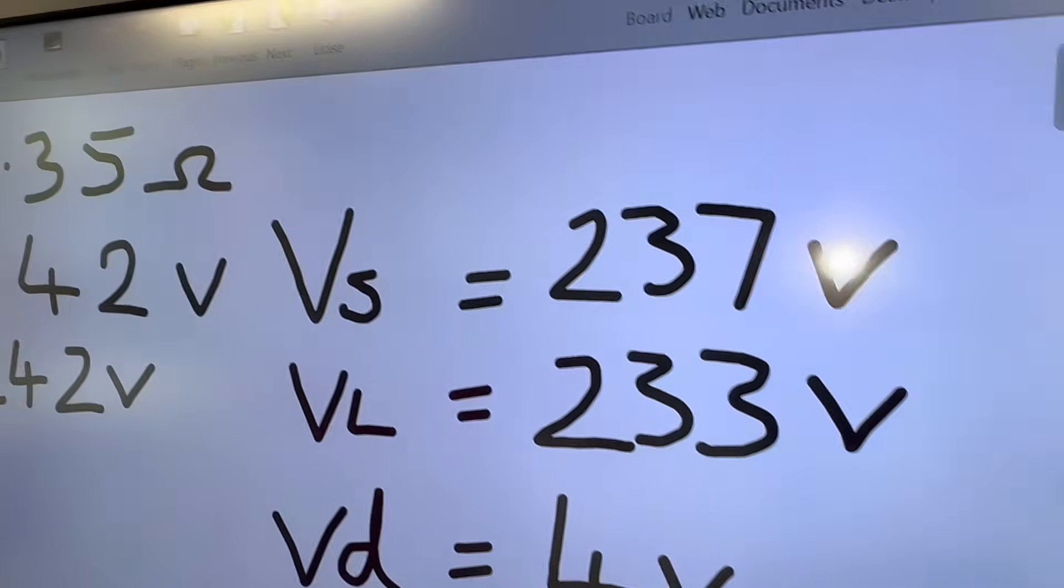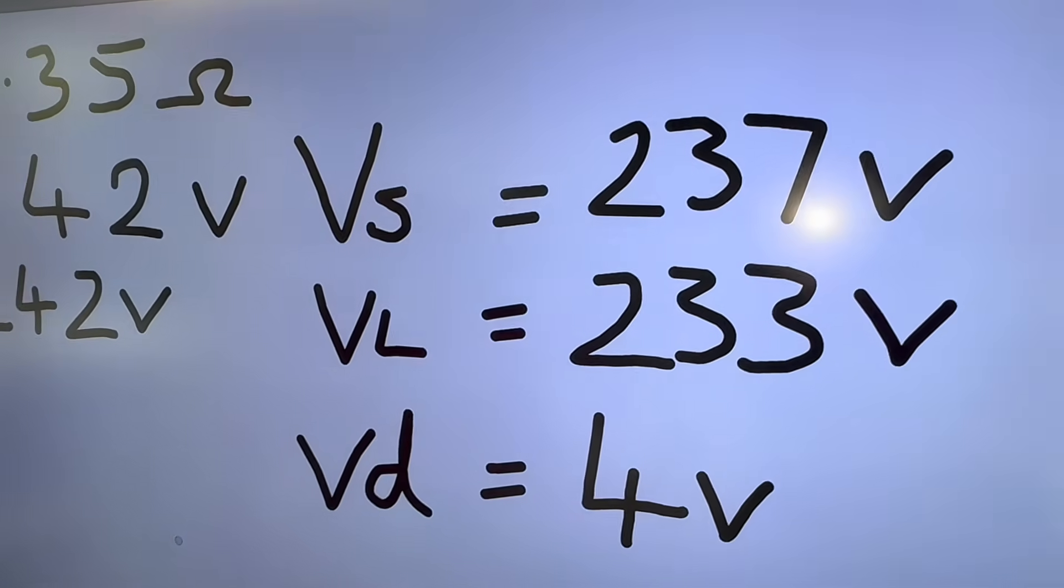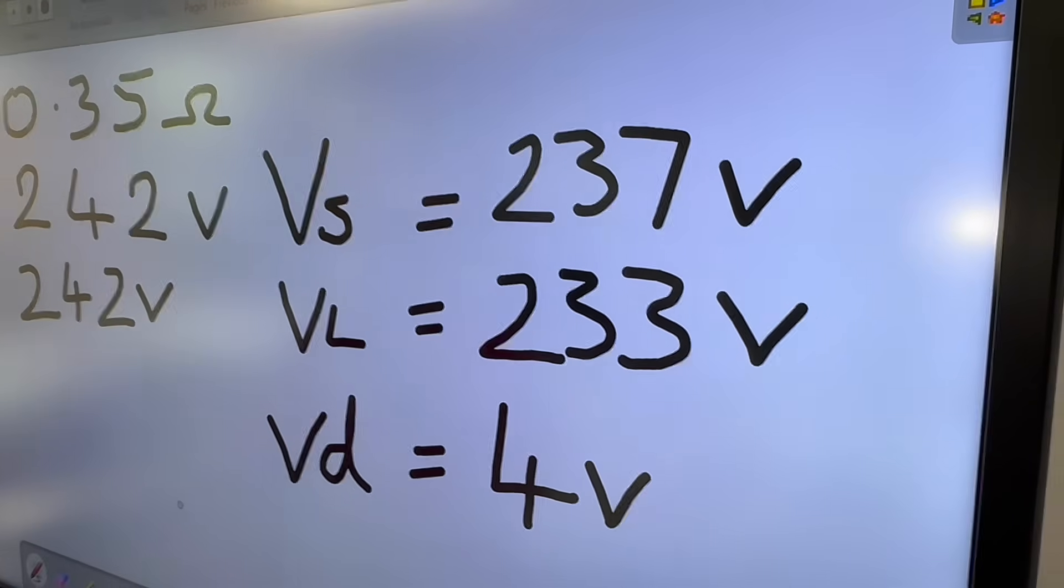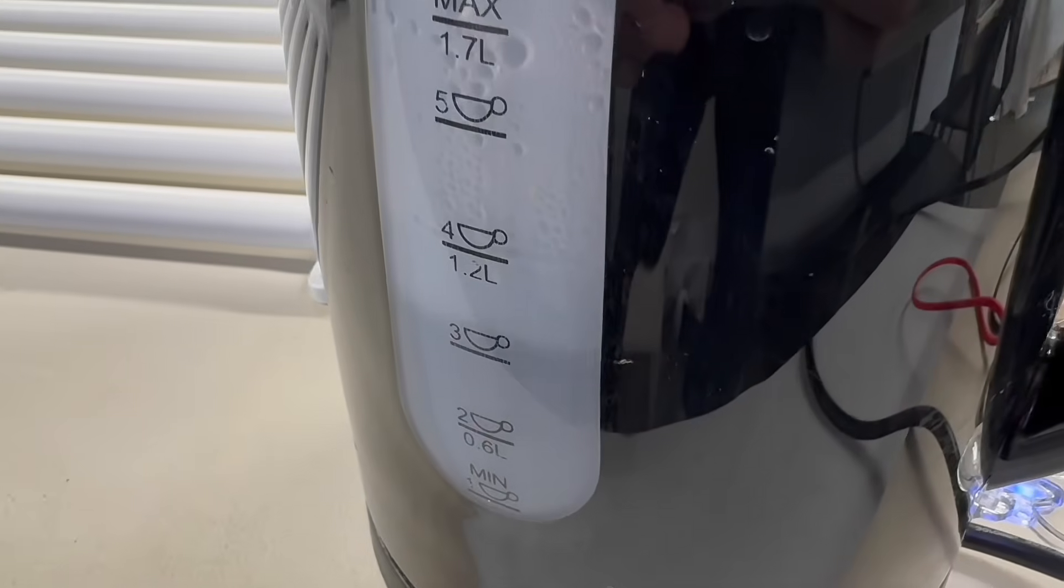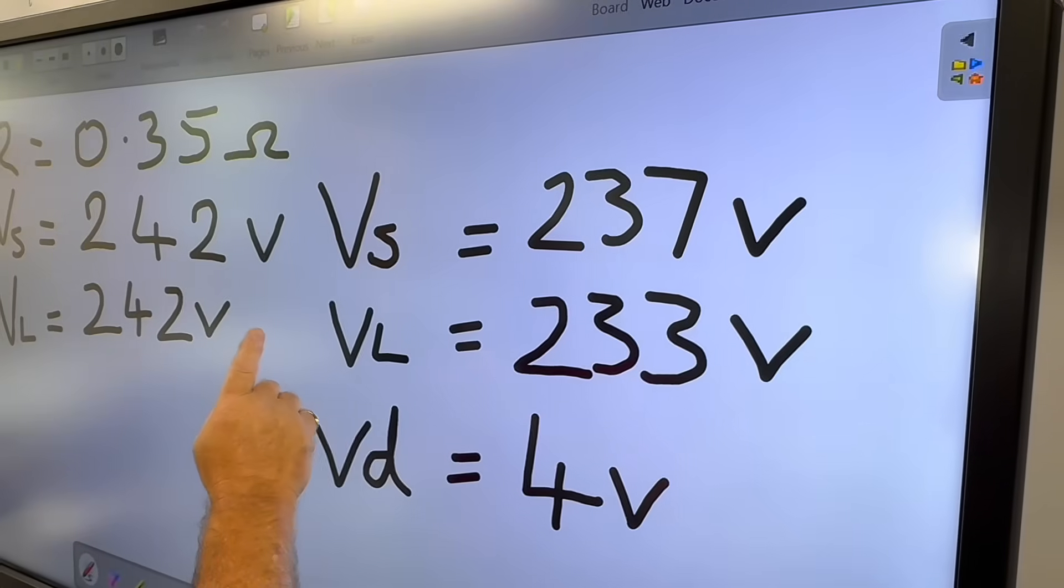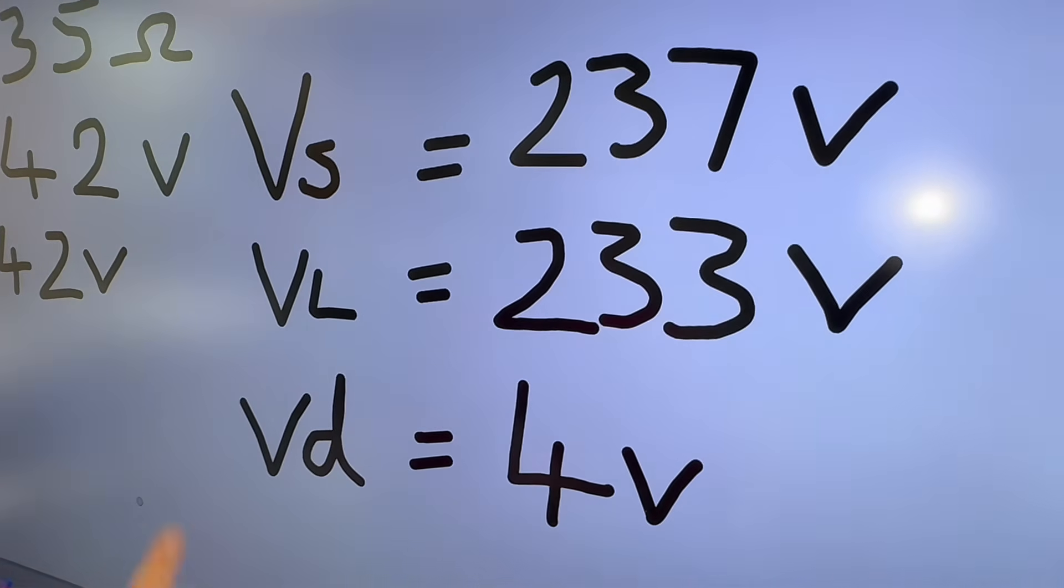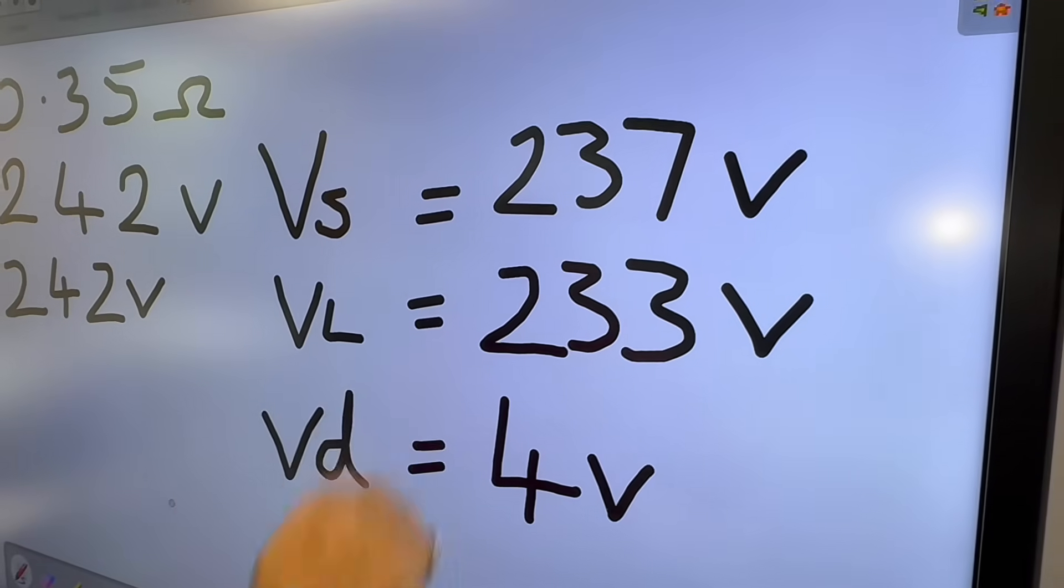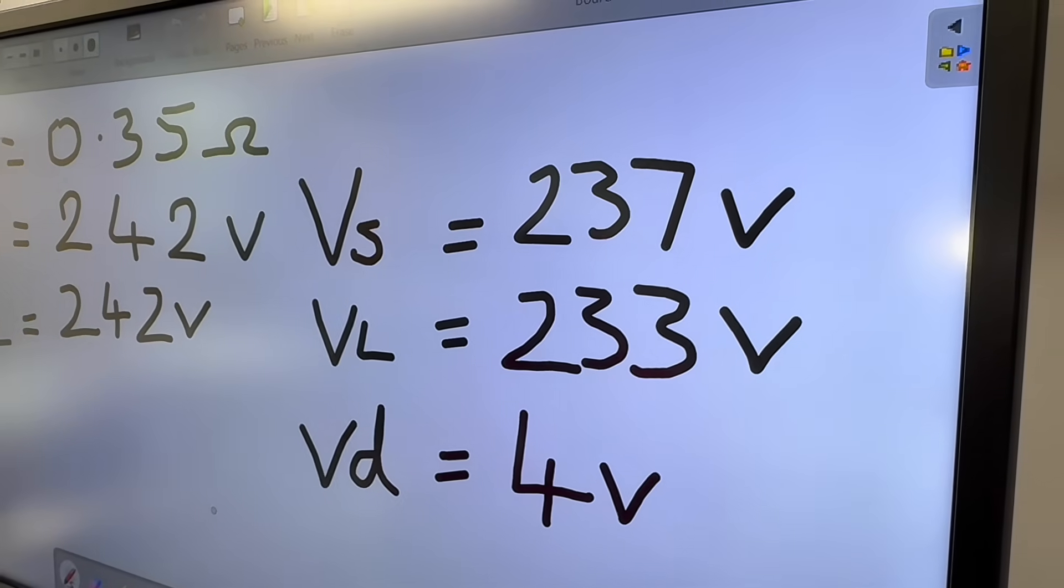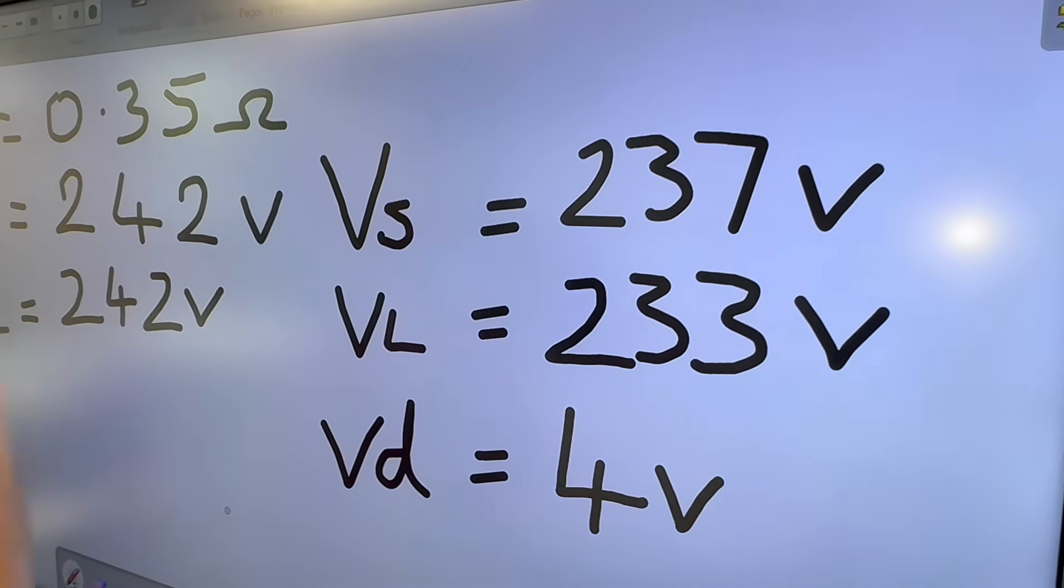And we had the original voltage supply was 242 volts. And the supply at the load was 242 volts. Yeah, that did then change, didn't it? Once we introduced that 3 kilowatt kettle load, we had some changes in voltage. Supply voltage dropped down to 237 volts. And the load voltage dropped down to 233 volts, giving me a difference of 4 volts from the origin to the furthest point. We could call that voltage difference, VD, volt drop, couldn't we?